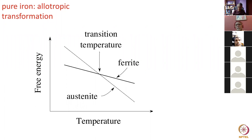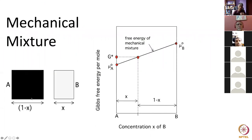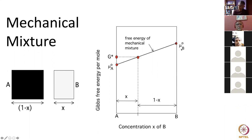In a mechanical mixture we have a component A and another chunk of material of component B. If I work out the mole fraction of A, it's 1 minus x, and the mole fraction of B is x. It's very easy to calculate the free energy of a mechanical mixture — it's simply the weighted sum of the free energy of pure A and pure B. This is not a solution; you can separate out the two bits just by picking them apart.